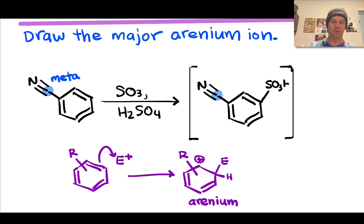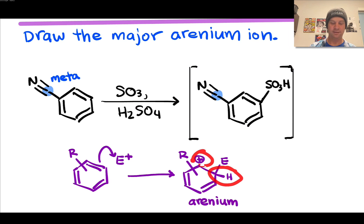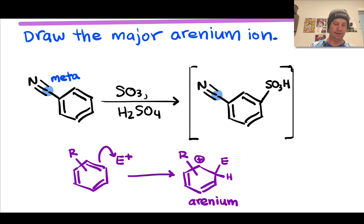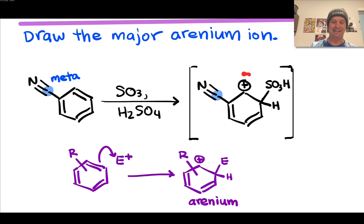We substitute SO₃H for H meta to the cyano group to get the final product, which is not yet the arenium ion. Comparing to the general structure, the arenium ion has an extra proton absent from the final product. We add that proton back by protonating the double bond at the same carbon where SO₃H is located, leaving a positive charge — and there are several resonance forms of the arenium ion highlighting delocalization of that positive charge.